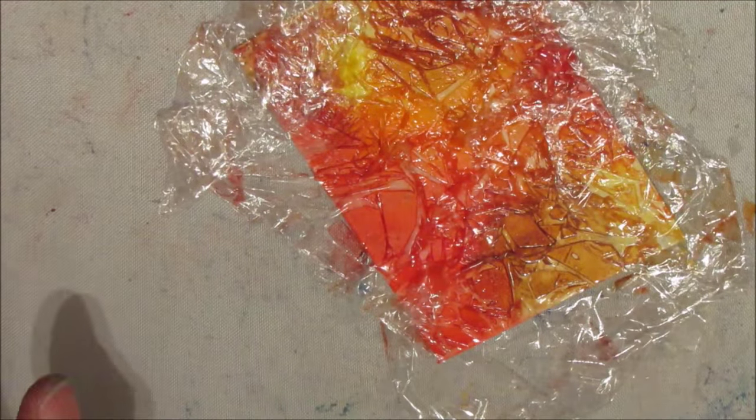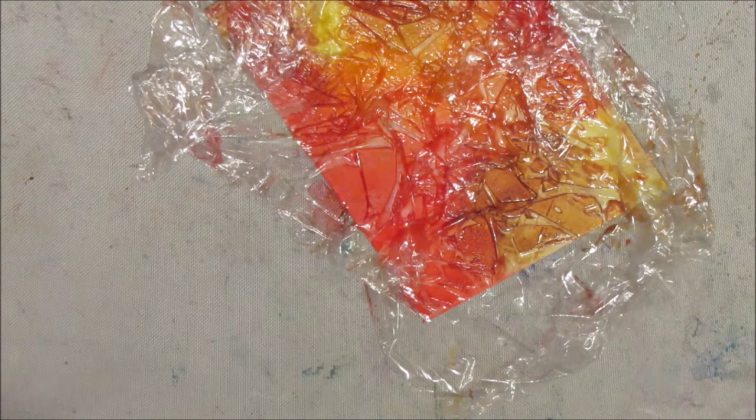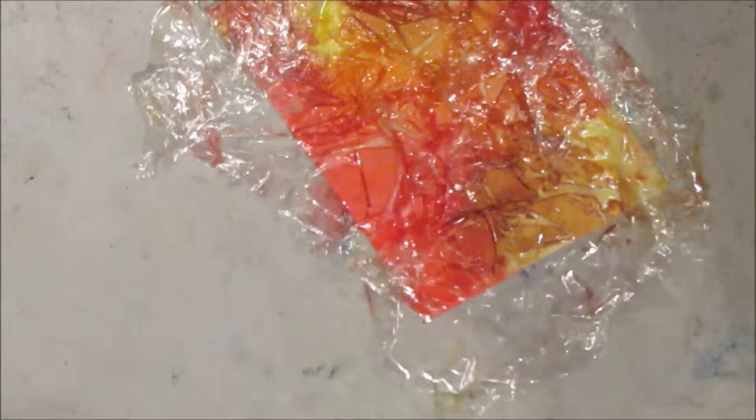So that was my Inktense blocks. So I thought, okay, let's try this with my gelatos. Another gessoed card. And I'm going to use my Faber-Castell gel sticks. They are very similar, slash identical to the gelatos, but you can only get the basic colors that you see here.